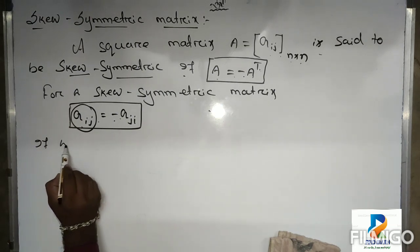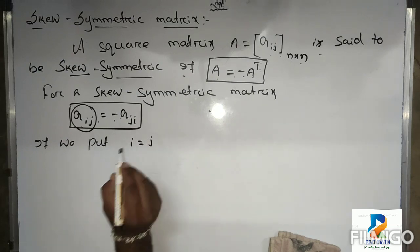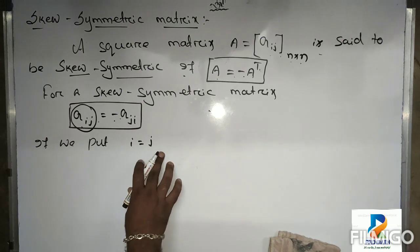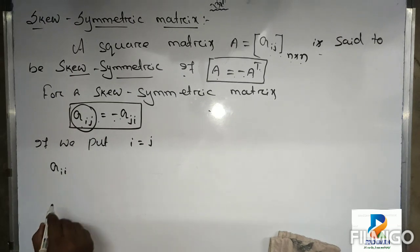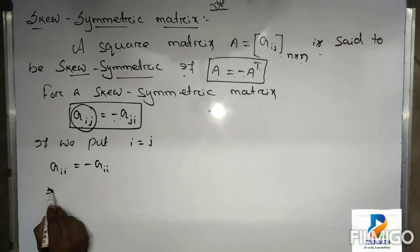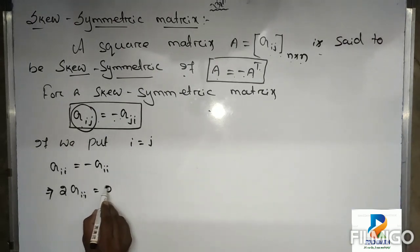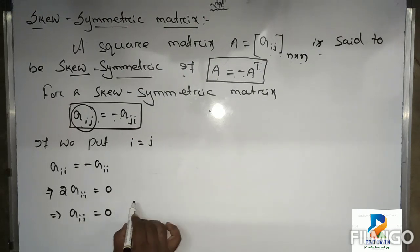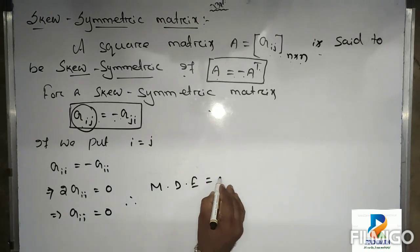Now what will be the main diagonal elements? If we put i equal to j for main diagonal elements, then aij becomes aii equals minus aii, which implies 2 times aii equals 0, that means aii equals 0. Therefore, remember students, the main diagonal elements equal to 0.